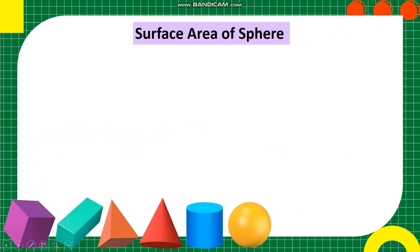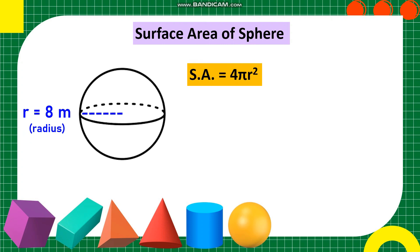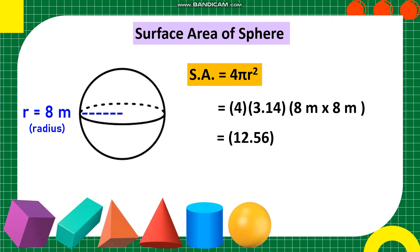Surface area of sphere. We have here the figure of a sphere whose radius measures 8 meters. To get the surface area, we use the formula: Surface area equals 4 times pi times radius squared. That is 4 times 3.14 times (8 m × 8 m). 4 times 3.14 equals 12.56; 8 times 8 equals 64 square meters; 12.56 times 64 equals 803.84 square meters. This is the surface area of the sphere.